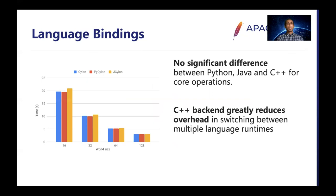This is another test we did just to make sure there are no overheads between the language bindings. This experiment shows that we didn't have much overhead between the C++, PyCylon, and Java-based implementations.